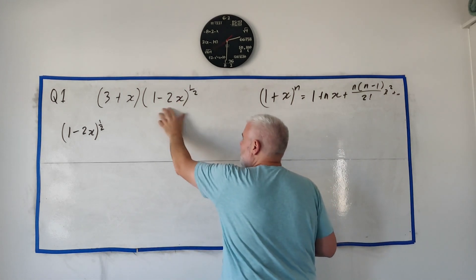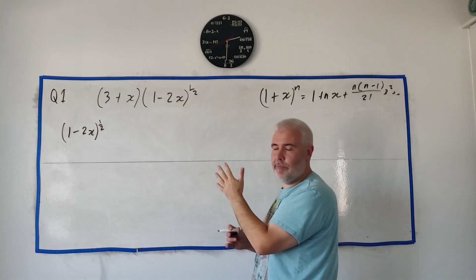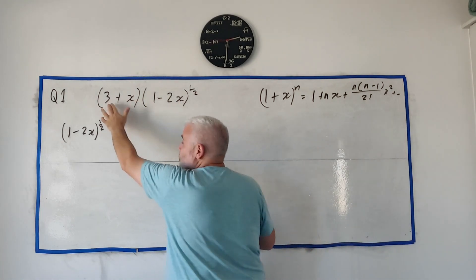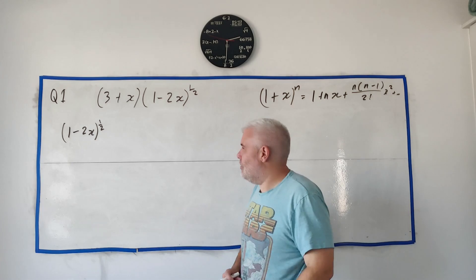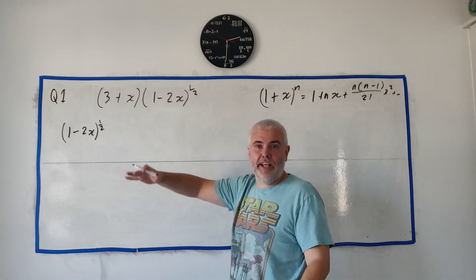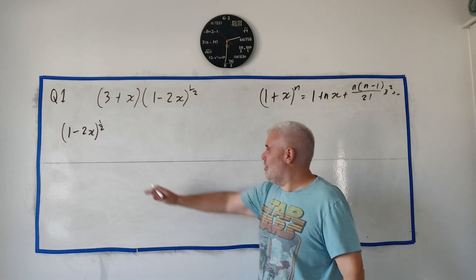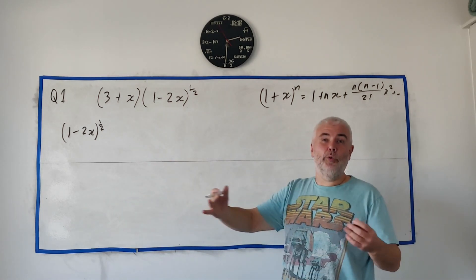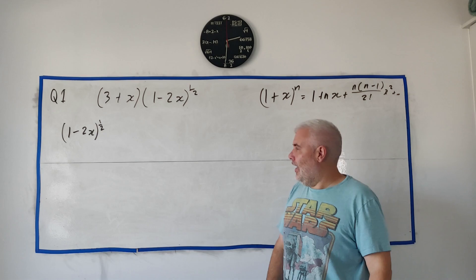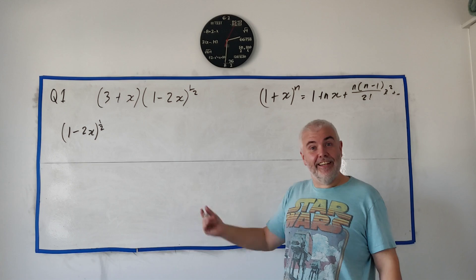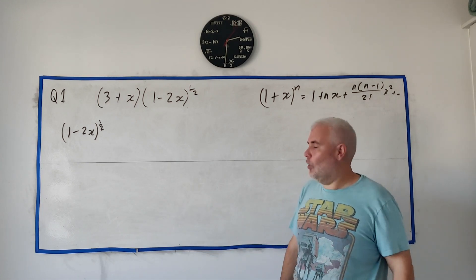Will I ever need an x squared from this expansion? So do I have to go up to x squared? And yeah, I will. An x squared from here would multiply by this three and get me an x squared. So I basically have to expand this up to x squared. Don't worry if you don't think that through. Really just expand this to an okay level. Go up to x cubed. It's just a little extra work. It won't cost you anything. Later on, you'll just end up not using that work.